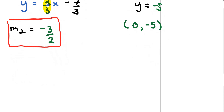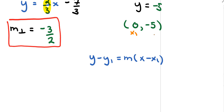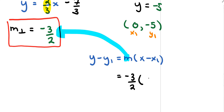Now I'll use the point-slope form of the equation of a line. Labeling x1 and y1, with slope negative 3 over 2: I get negative 3 over 2 times the quantity x minus 0, and since y1 is negative 5, I get y plus 5 on the left-hand side.